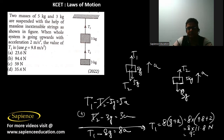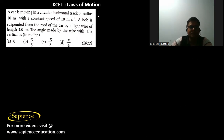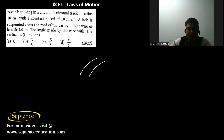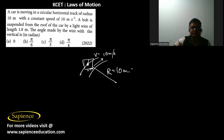Option B is the correct answer. Next, a car moves on a circular horizontal track of radius 10 meters with a constant speed of 10 m/s. A bob is suspended from the roof of the car. The angle made by the wire with the vertical has to be found.